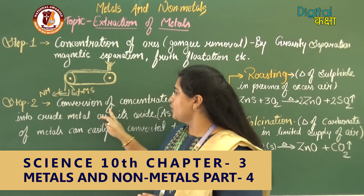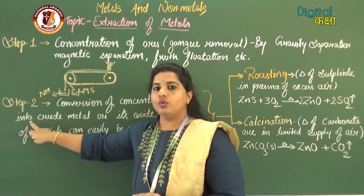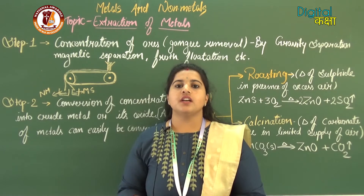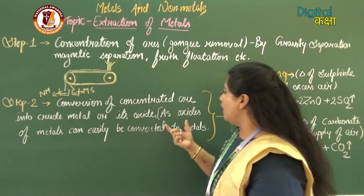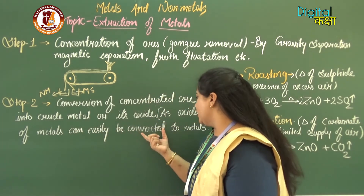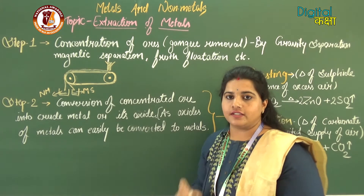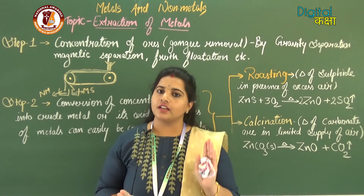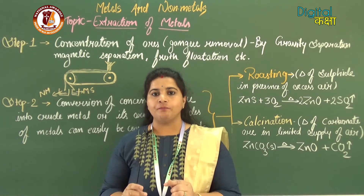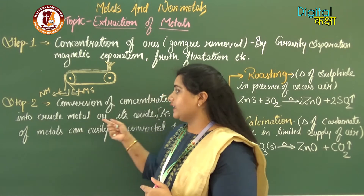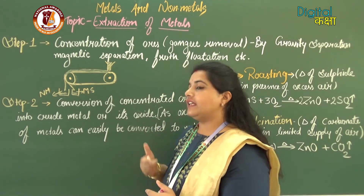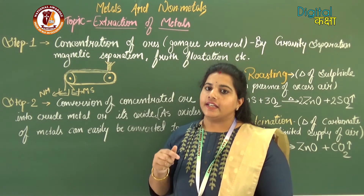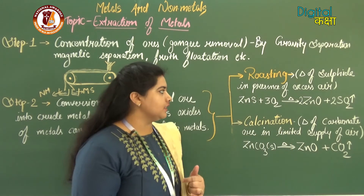After concentration we proceed to Step 2: conversion of concentrated ore into crude metal or its oxide. The metal ore is converted to metal oxide because oxides of metals can easily be converted to metals. For example, zinc is obtained from the earth's crust as zinc sulfide (ZnS) or zinc carbonate (ZnCO3), and these are converted to zinc oxide.